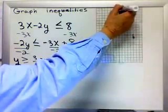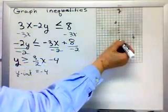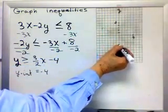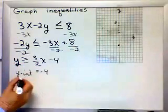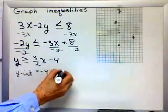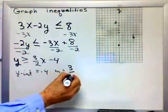So, y-intercept is minus 4. So I'm going to graph on the y-axis. There's a y-axis minus 4. Put a dot there. That's my starting point.